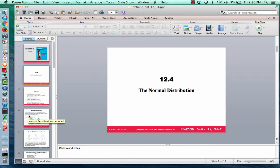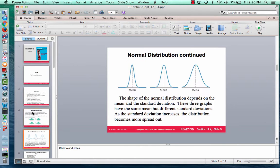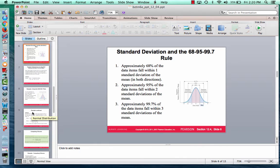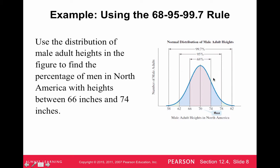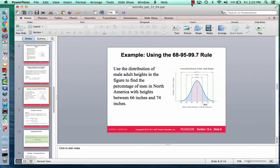That's really all we're going to cover. Mainly we need to know the properties of the bell curve — that it's centered at the mean and we can count off by the standard deviation, one, two, three above and below. Then we can use the bell curve to estimate the percentages between certain heights, weights, or other values. Good luck, and we'll see you next time.